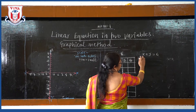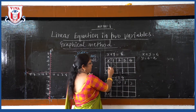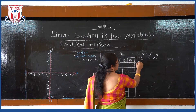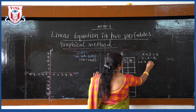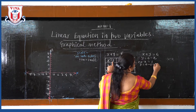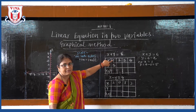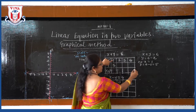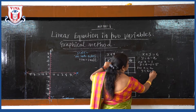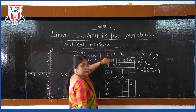First, rearrange the equation: y is equal to 6 minus x. Now put x equal to 1, so y is equal to 6 minus 1, that is 5. When x equals 1, y equals 5. Now put x equal to 2, then y is equal to 6 minus 2, that is 4. So when x equals 2, y equals 4.